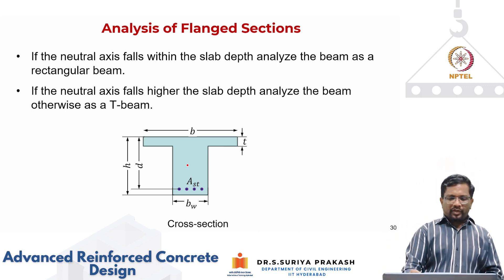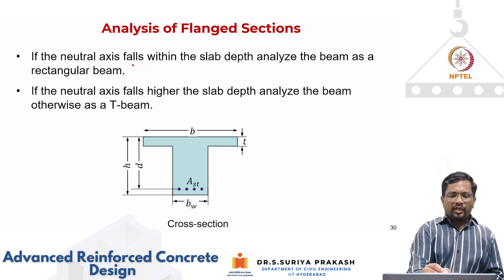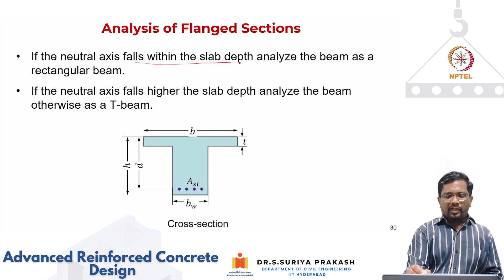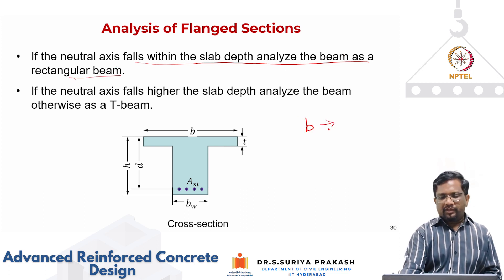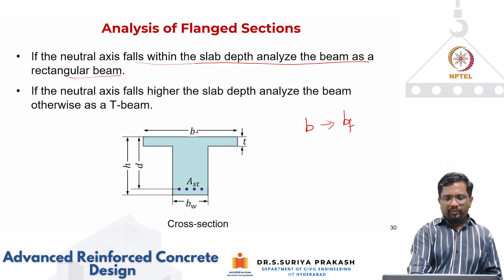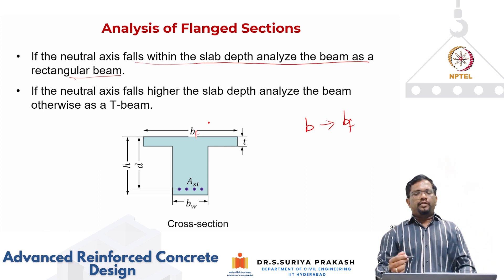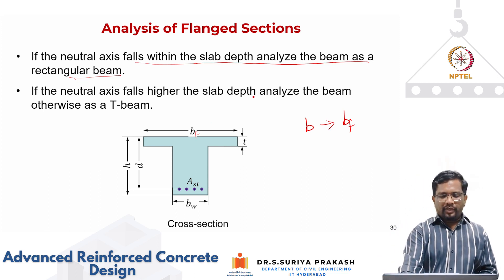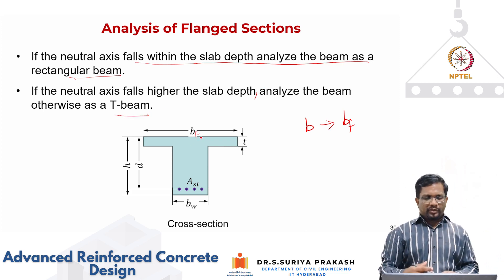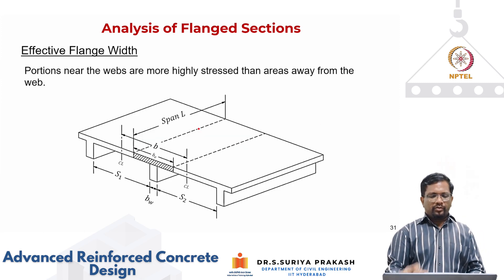For a T-section, you can have two situations. If the neutral axis falls within the slab depth, you can analyze the beam as a regular rectangular beam, using B_f instead of B. If the neutral axis falls deeper than the slab depth, then you have to analyze the beam as a true T-section, considering two separate compression areas. Let us see how to do that calculation.